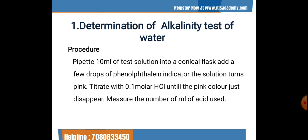Here we are using the older technique: the color indicator method. A color indicator changes its color as soon as all the substance in the sample has reacted with our titrant of known concentration, which we are adding drop by drop. The concentration of the substance can then be calculated based on the volume of titrant required until all the substance has reacted. We add the particular value obtained by titration into the calculating formula to find the concentration of that compound in the water sample.